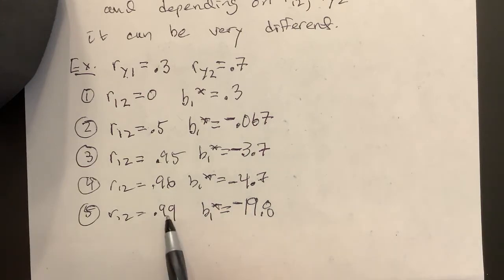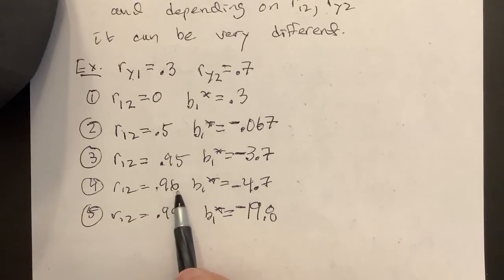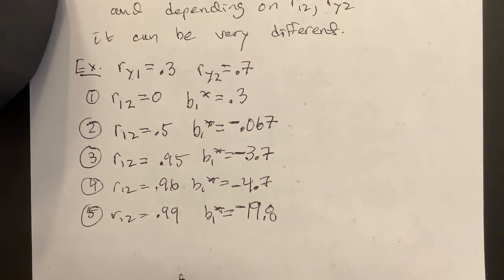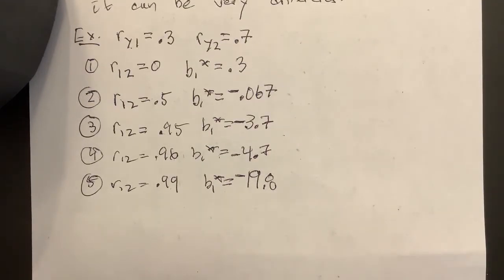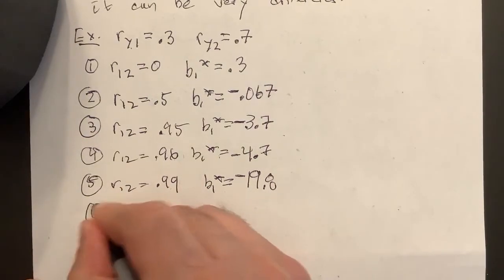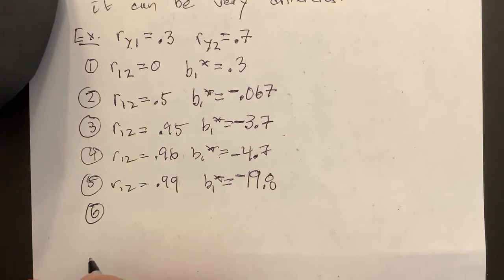You can see what's happening, it's getting a little unstable as I get higher. A slight shift, which could be just a little bit of an arithmetic or an experimental error, leads to a big jump in the coefficient. So this is an effect of x1 and x2 being correlated. There's more going on here.